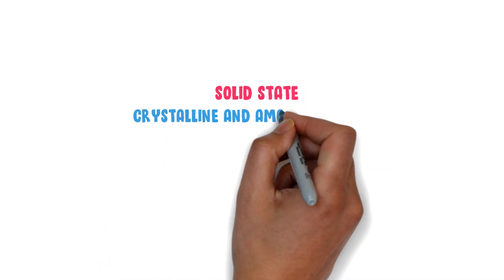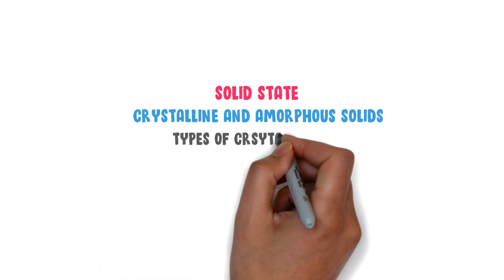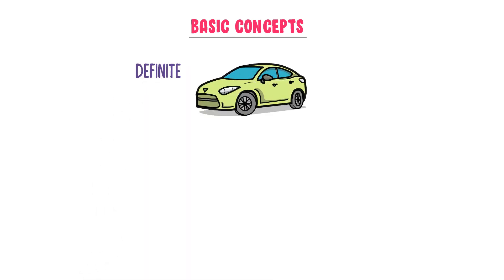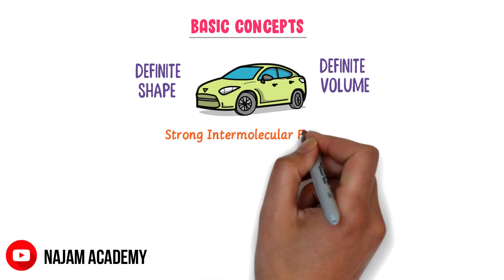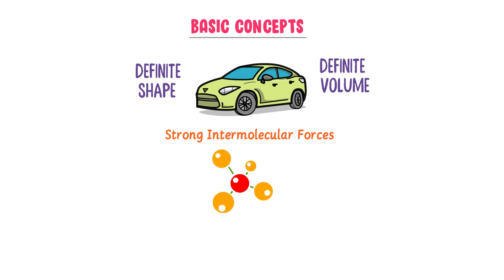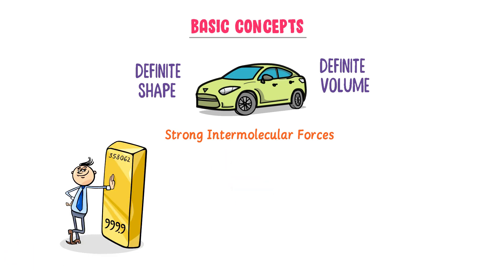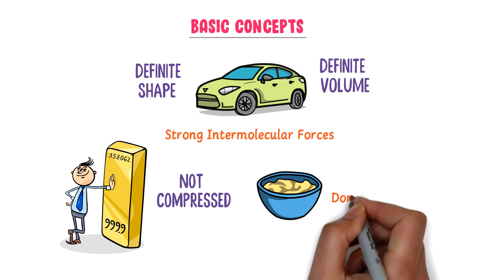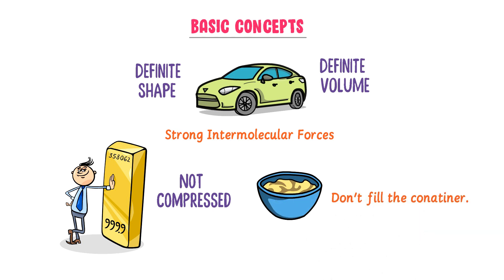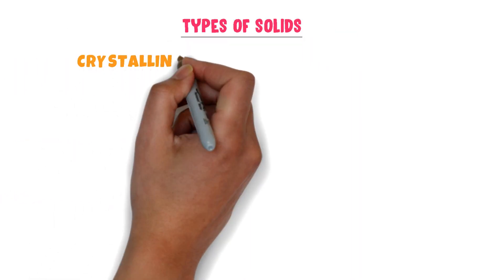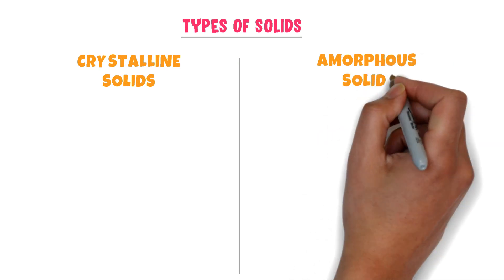Solid State: Crystalline and Amorphous Solids, and Four Types of Crystalline Solids. Let me review some basic concepts of solids. Solids have definite shape and definite volume. Strong intermolecular forces exist between the particles of solids. Solids cannot be compressed and they do not fill the container like gases. There are two types of solids: crystalline solids and amorphous solids.